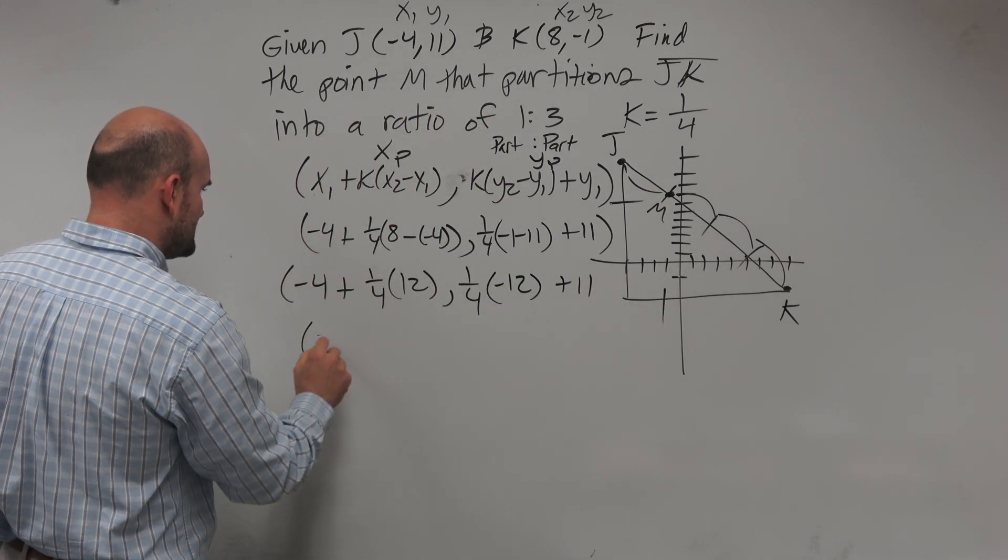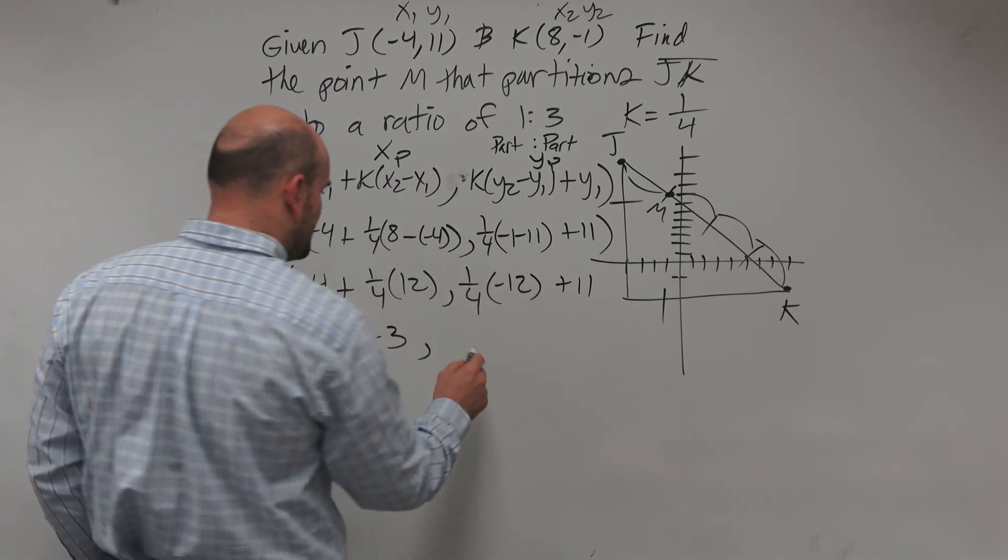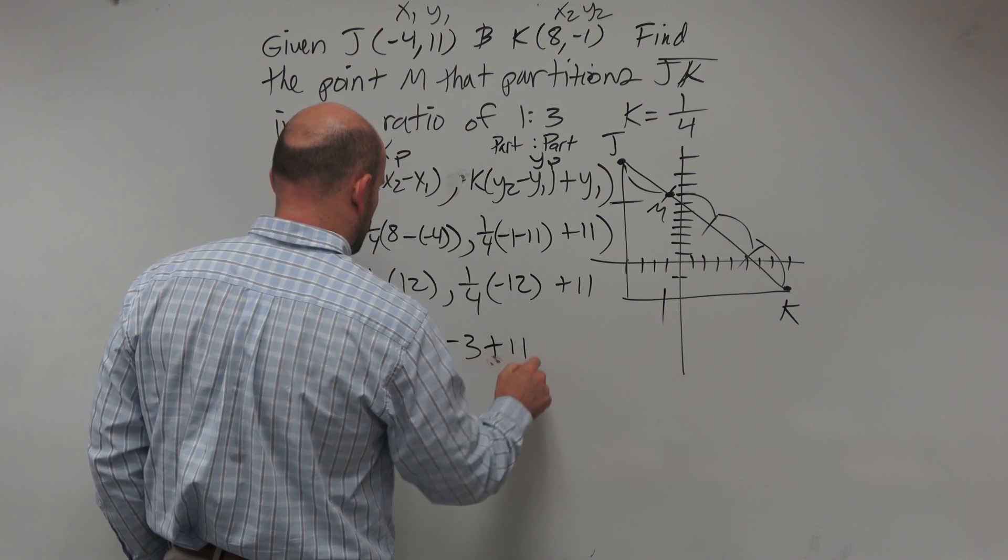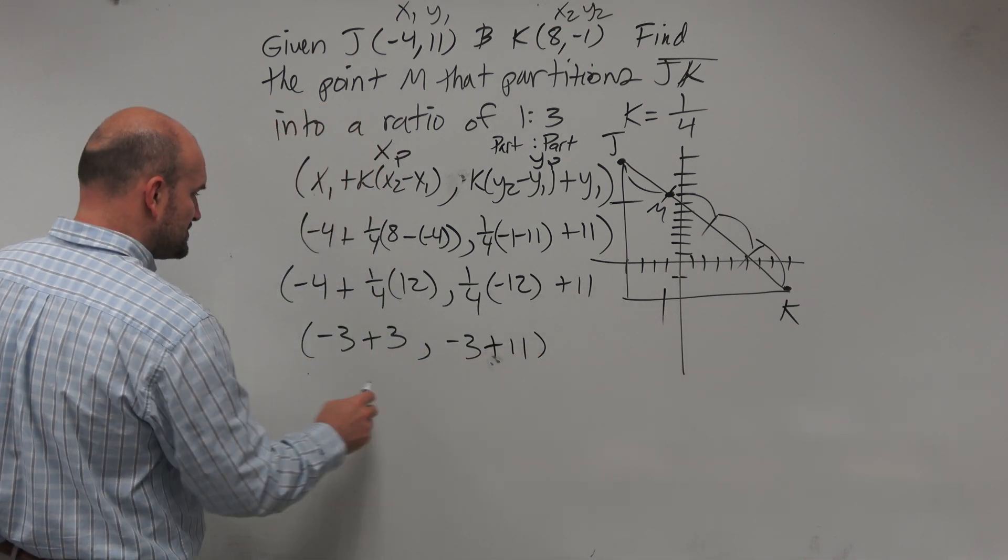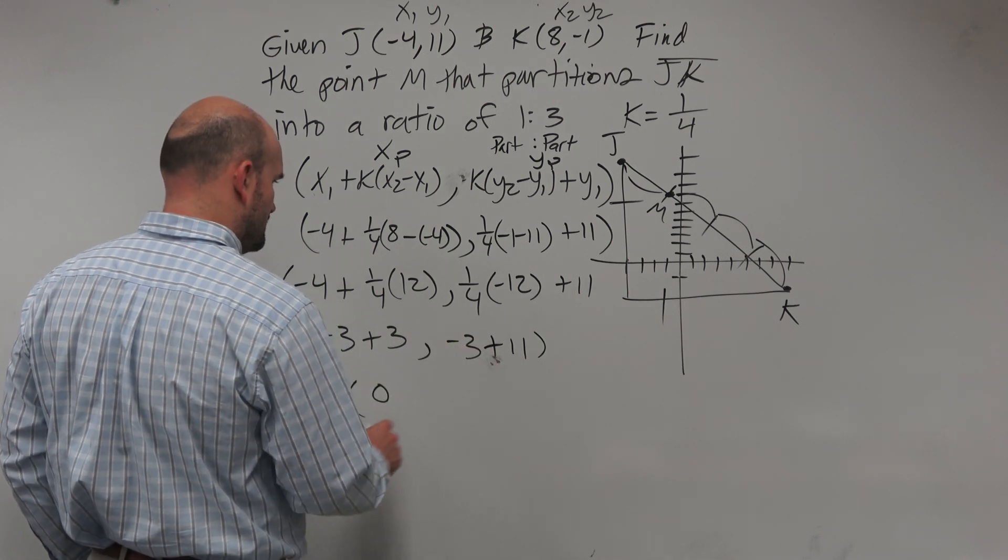Negative 1 minus 11 is going to be negative 12, then plus 11. 4 divides into 12 three times, that's going to be plus 3. 4 divides into negative 12 negative 3 times, and then it's plus 11. So negative 4 plus 3 is negative 1, and then negative 3 plus 11 is going to be 8.